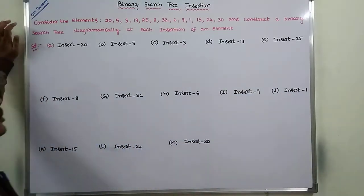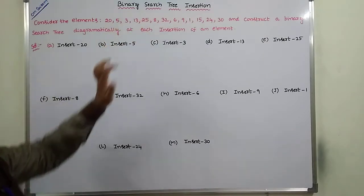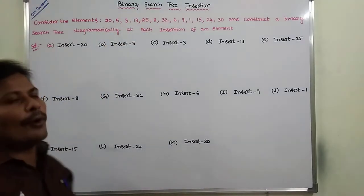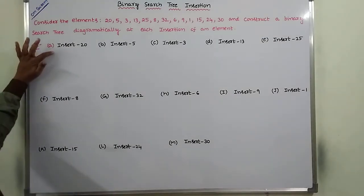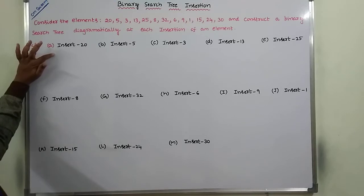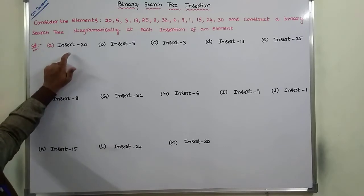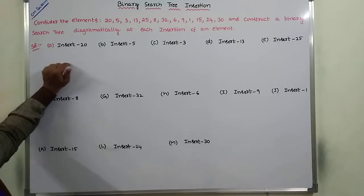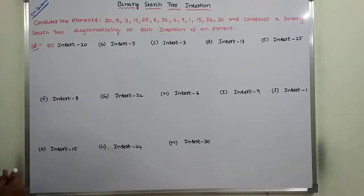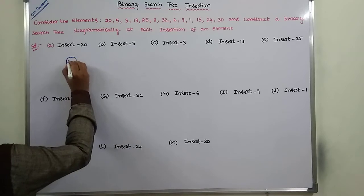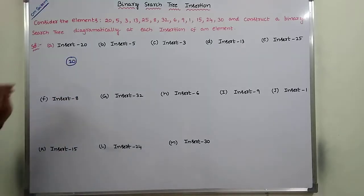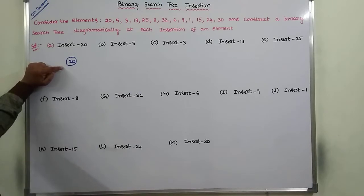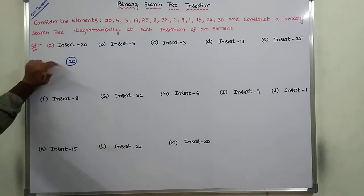Now we go for one example. These are the elements that we are inserting into the empty binary search tree. First, insert 20. Before inserting element 20, the binary search tree is empty. Whatever the first element we are inserting into the binary search tree, that element creates a node which acts as the root node. So, element 20 is inserted into the empty binary search tree. Now the binary search tree contains a single node, which acts as the root node.